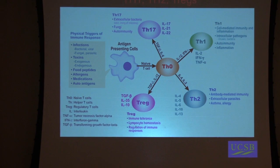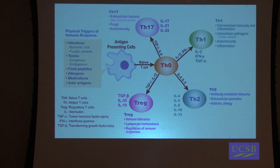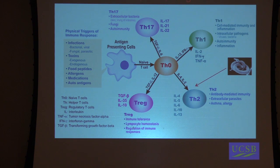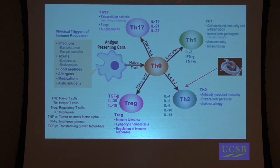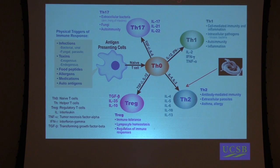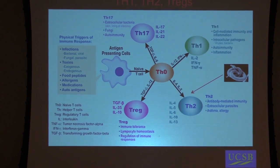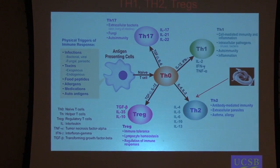Part of the reason helminths seem to have these various effects is that they affect host immune function. In general, what they seem to do is shift immunity towards a more Th2-type phenotype. You've got different types of T-cells, and this Th2 phenotype is sort of anti-inflammatory. Helminths are also affecting T-regs as well, which is also anti-inflammatory, regulating inflammation.